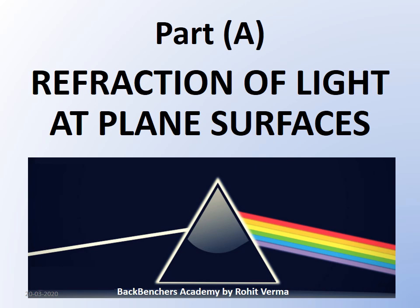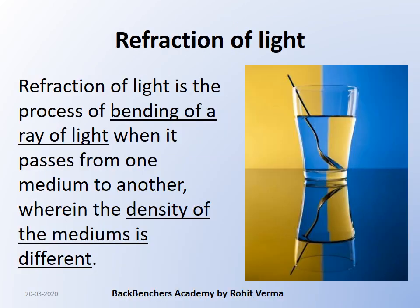Let's understand the basics — what exactly does refraction of light mean. Refraction of light is defined as the process of bending of a ray of light when it passes from one medium to another, wherein the density of the mediums is different. This is exactly what we can see in this diagram: when we place a spoon inside a half-glass filled with water and look from the outside, the spoon appears to be bent. The same thing happens in a swimming pool — the lower portion of the body appears shorter.